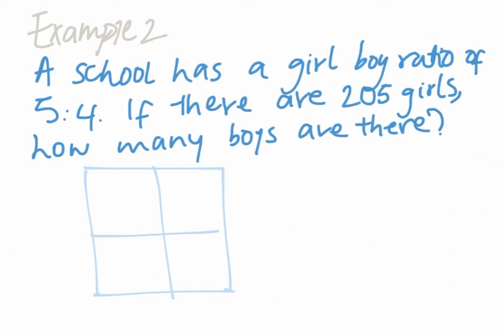Example number two says a school has a girl-boy ratio of five to four. If there are 205 girls, how many boys are there? So again, first you write what you know, the information.